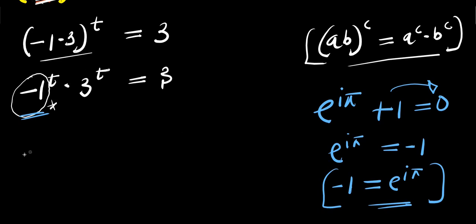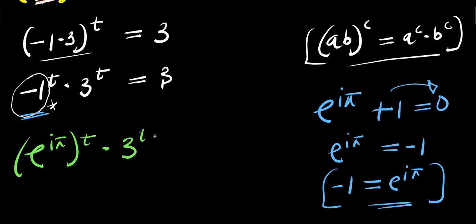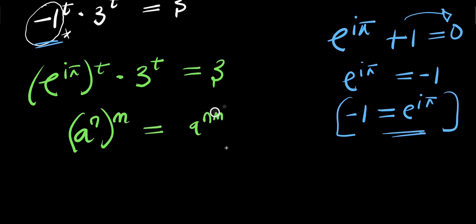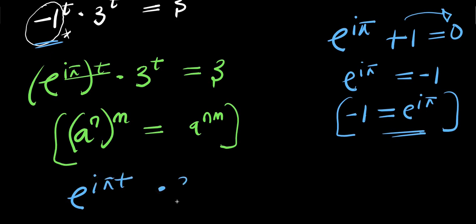So we are going to have e to the power of i times pi, raised to the power of t, times three raised to the power of t, equals three. We apply the identity that e to the power of (i·π) raised to the power of t equals e to the power of i times pi times t. So multiplying the exponents out, we have e to the power of i times pi times t, times three raised to the power of t, equals three.